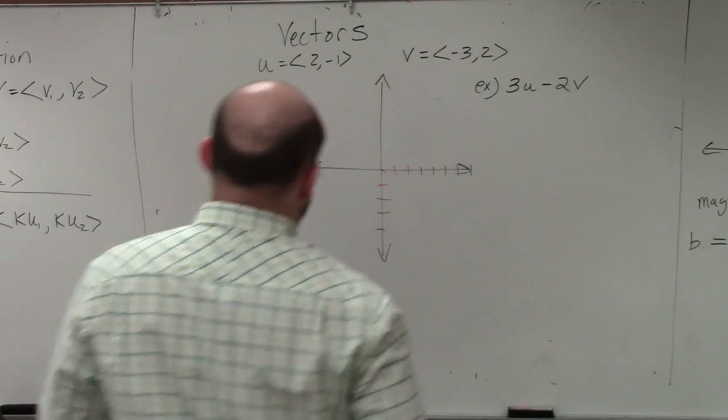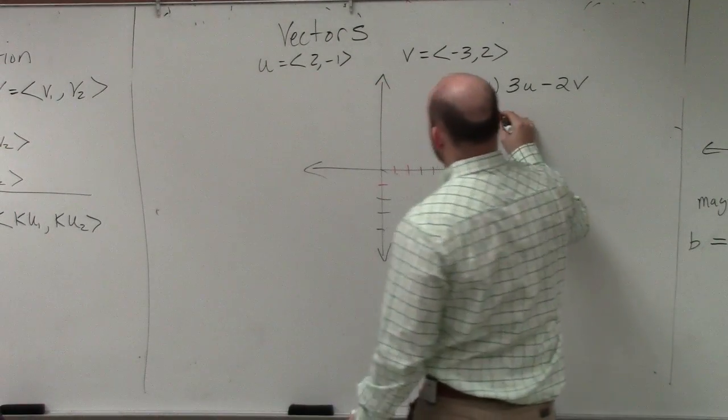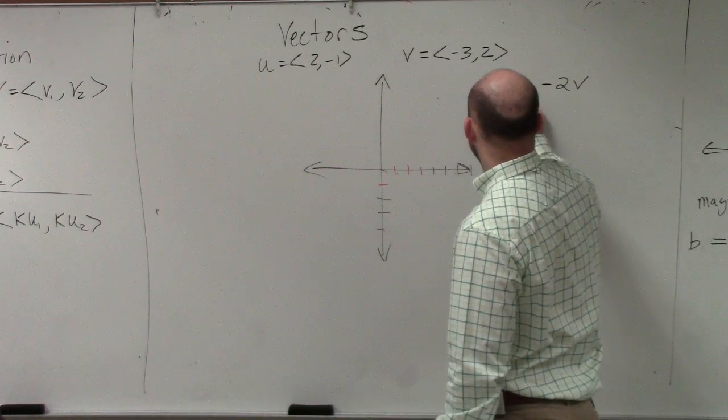And now this one, you can see we have a scalar for both ones. So basically what I'm going to do is just take my u and my v.